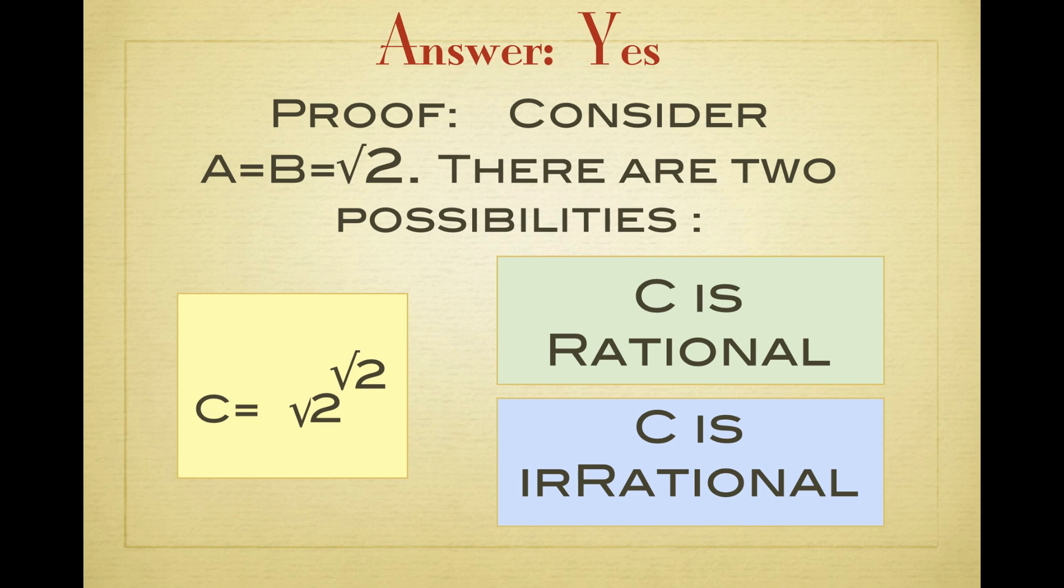Either c, which is the square root 2 to the power of square root 2, is rational. That's the first case. Or we have that c is irrational.